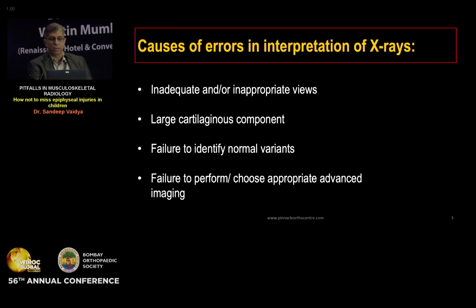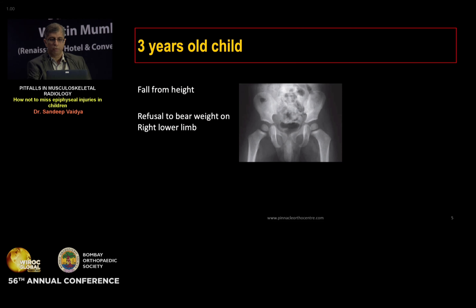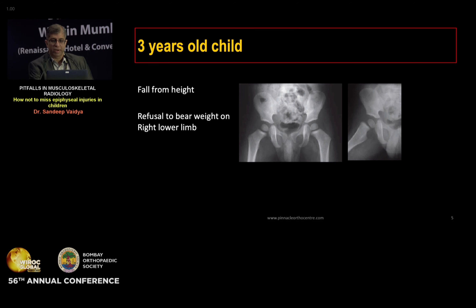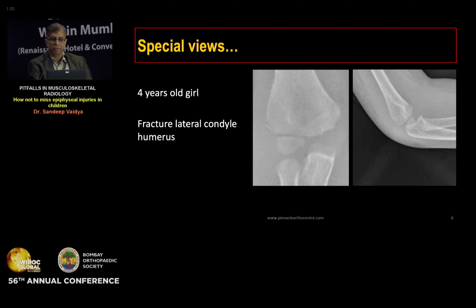Let's look at the reasons why there are errors in interpretation of X-rays in epiphyseal injuries. The first reason can be as simple as failure to obtain optimal radiographic views. Consider this X-ray: a three-year-old child with a history of fall from height followed by refusal to bear weight on the right lower limb. The AP X-ray looks okay, but the lateral X-ray clearly shows a femur neck fracture — Delbet type 1 — which requires closed reduction and internal fixation.